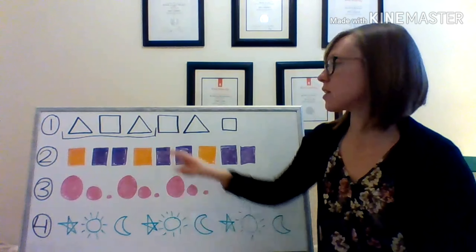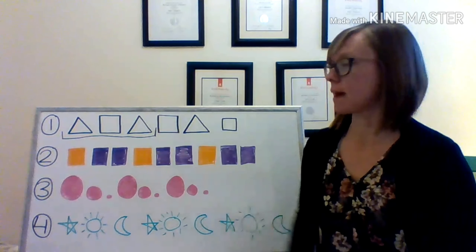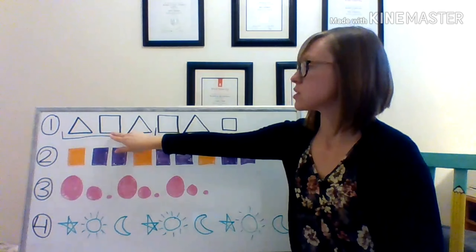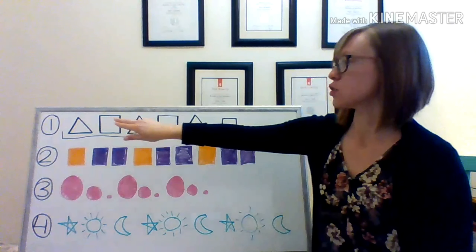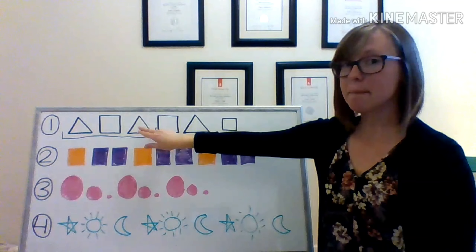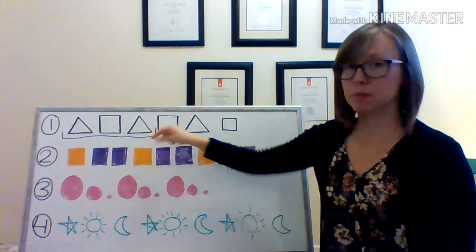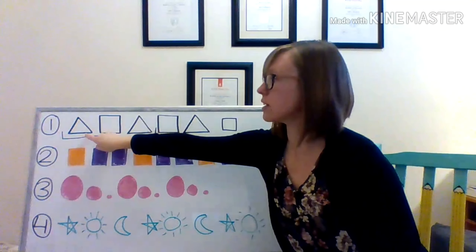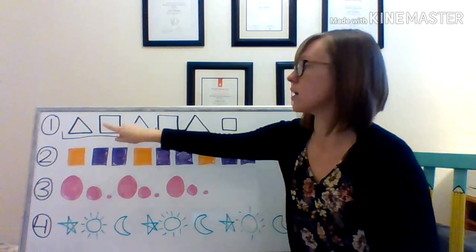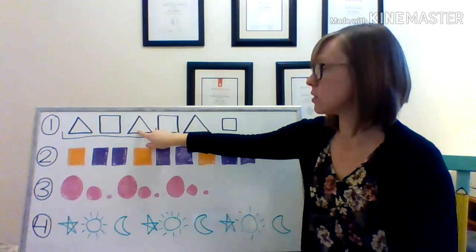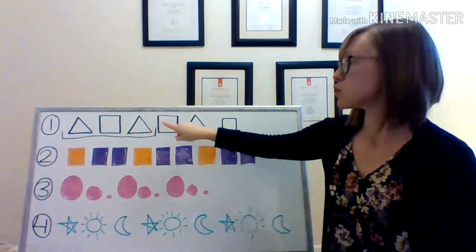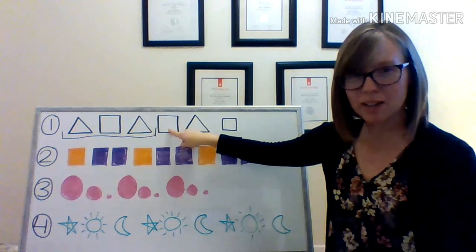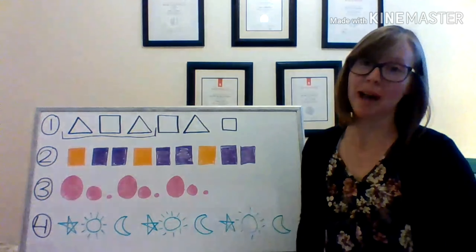Let's see if this is the core of our pattern. If the core is triangle, square, triangle, that means that's what's going to be repeated after it. So if I think my pattern is triangle, square, triangle, let's see if it repeats. Oh no, it's not a triangle next. That means I still don't have it.